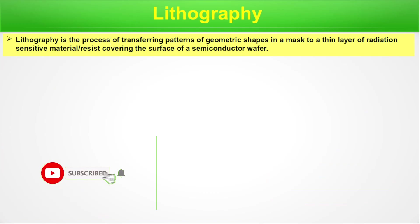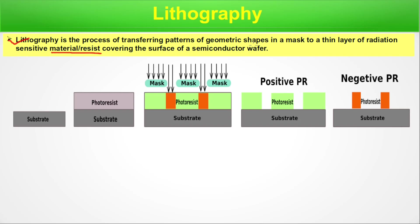Lithography is the process of transferring patterns of geometric shapes in a mask to a thin layer of radiation-sensitive material, or resist, covering the surface of the semiconductor wafer. The semiconductor wafer is covered with photoresist, which is radiation-sensitive, and light is used to transfer the pattern from the mask onto the substrate. There are two types of photoresist — positive and negative. In positive photoresist, when the material is exposed to light it becomes soluble in the solvent, while the unexposed part hardens. In negative photoresist, the exposed portion hardens and the rest is soluble.